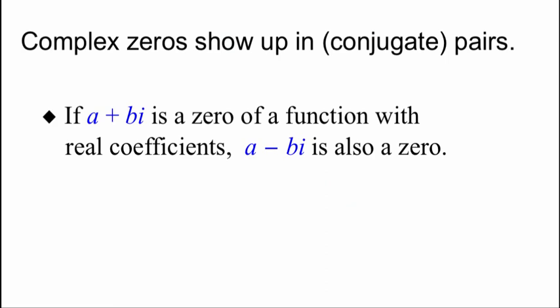If, when solving a function, we end up with a complex zero, one thing we'll notice is that those things show up in conjugate pairs. So if a plus bi is a zero of the function, then automatically a minus bi has to be a zero as well. We're going to use this fact to help us write out actual functions based on given zeros.